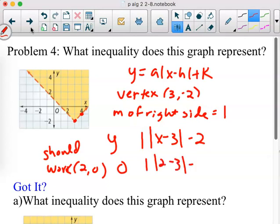So if this is 0 and this is 2, what's 2 minus 3? Negative 1. What's the absolute value of negative 1? 1. So what's 1 times 1? 1. Minus 2? Negative 1. Now remember, we want this to work. 2,0 was in the shaded region. So what could we put in between here that would make that a true statement? Greater than. Now do we want an equals bar? No. Greater than. Greater than will work.